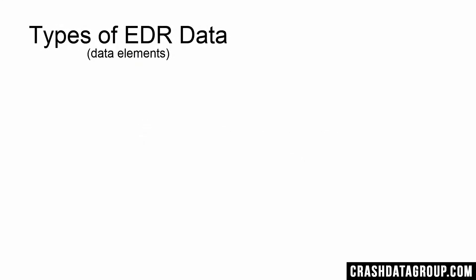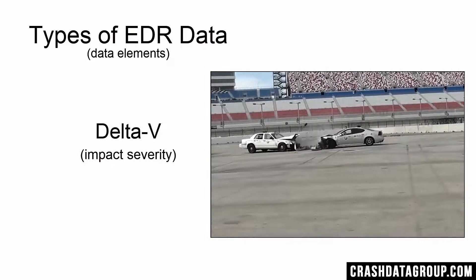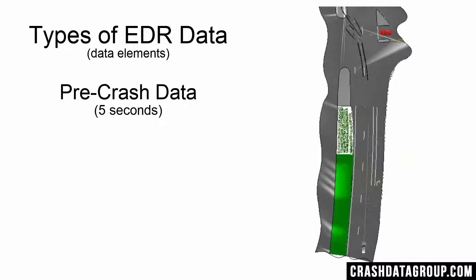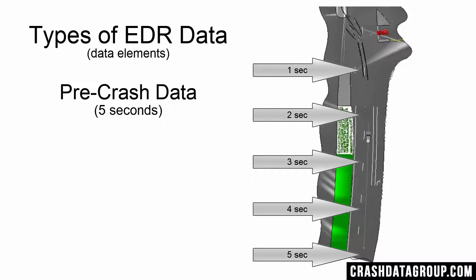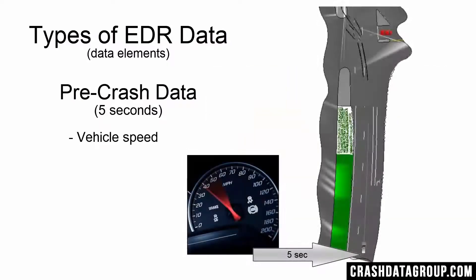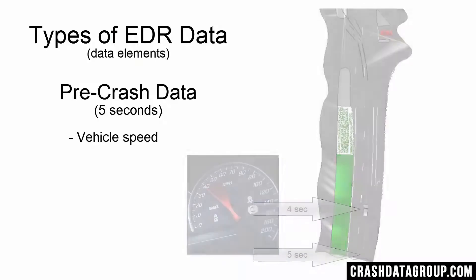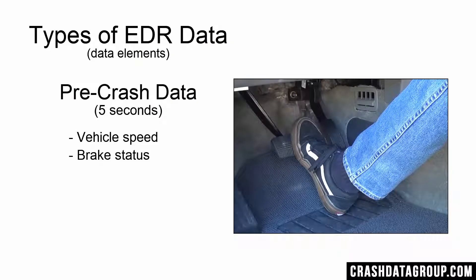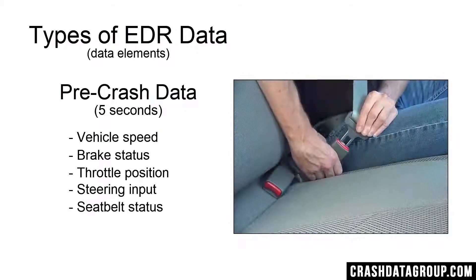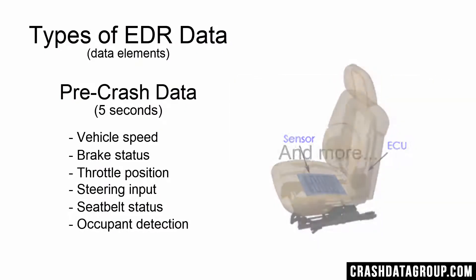The most commonly used types of data contained in an EDR include delta V, which represents the speed change that a vehicle experienced during the crash and can be used to determine the severity of the impact. In addition, most EDRs record at least five seconds of pre-crash data — exactly that, pre-crash. Pre-crash data elements include things such as vehicle speed: how fast was the vehicle traveling five seconds before impact, four seconds before, and so on. Other pre-crash data elements include brake status, throttle position, steering input, seatbelt status, occupant detection, and more.